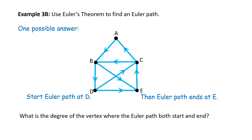What is the degree of the vertex where the Euler path starts and ends? They are both degree 3 — they're odd.